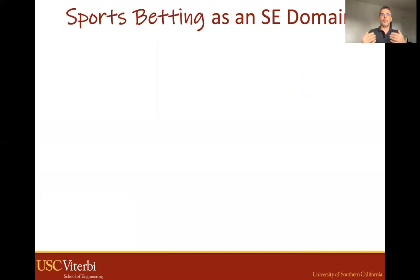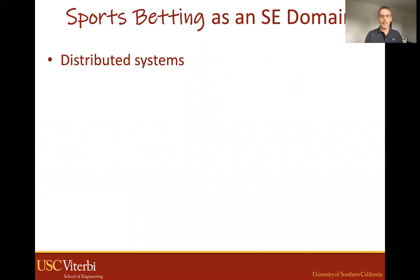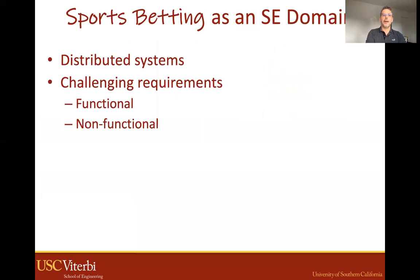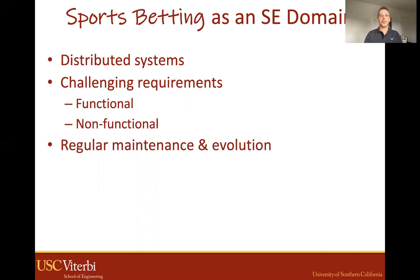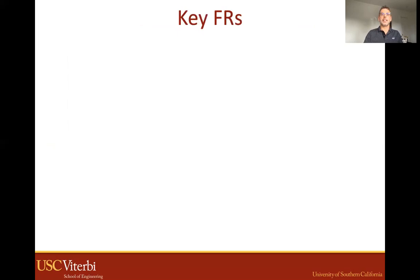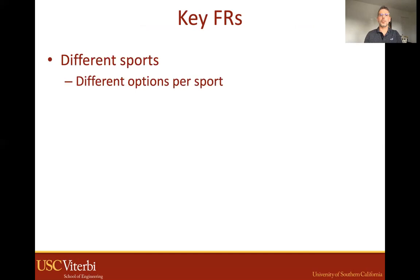Sports betting is a very challenging software engineering domain — that's what makes it interesting and why we worked on this paper. These sports betting systems are distributed systems with very challenging functional and non-functional requirements. They require regular maintenance and evolution due to advancing technology, new customer needs, growing user expectations, and competing solutions. Requirements include covering different sports in different regions, each with different betting options. The way you bet on a baseball game is not the same as a tennis match or a soccer game.